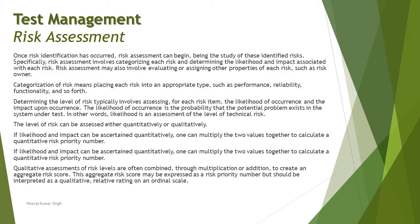This assessment can be done in two ways to determine the level of risk: quantitatively or qualitatively. Quantitative measurement means you work on a number scale, for example one to five, with one being the lowest and five the highest — applied to both likelihood and impact. Assume a risk has likelihood 3 and impact 3; you multiply these to get a priority number of 9. Another risk with likelihood 4 and impact 5 gives a priority of 20, which has a higher priority. You prioritize risks by multiplying these two values — this is called quantitative assessment.